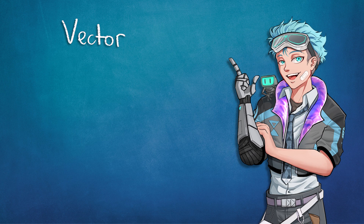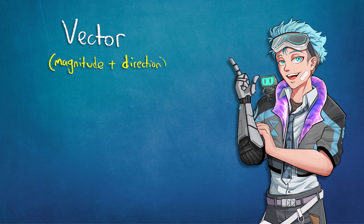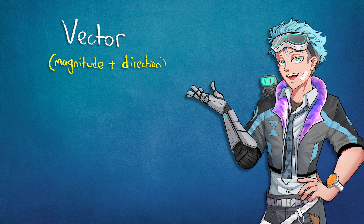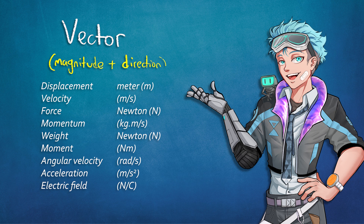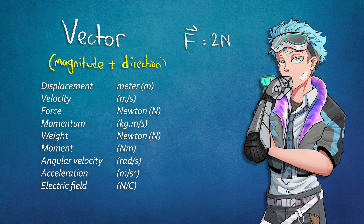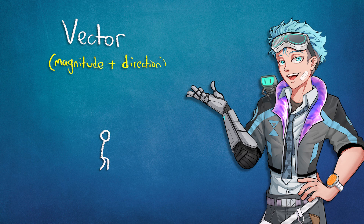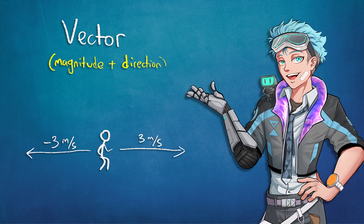A vector, on the other hand, does depend on the direction of the object it's describing. Vectors include quantities like displacement, velocity, force, momentum, weight, and more. Sometimes an arrow is put over a symbol to indicate that it's a vector. These quantities may be negative or positive simply by having the object they're describing face different directions — a person running at 3 meters a second is heading the exact opposite way of someone running at minus 3 meters a second.